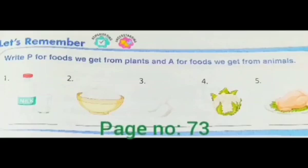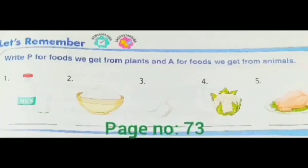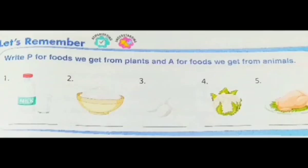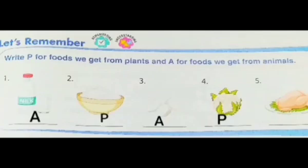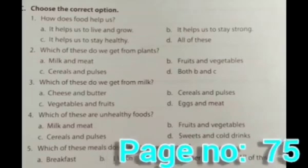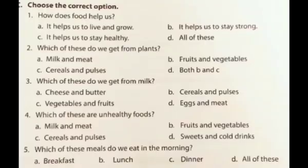Now turn to page 73 for the next activity. Write P for foods we get from plants and A for foods we get from animals. Milk — we get from animals. Rice — we get from plants. Eggs — we get from animals. Cauliflower — we get from plants. Meat — we get from animals.